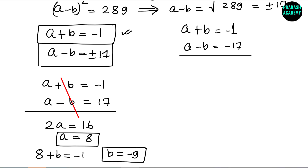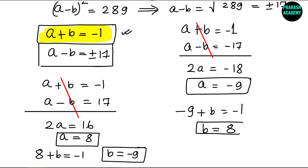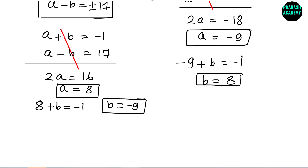Case 2: A plus B equals minus 1 and A minus B equals minus 17. Adding, 2A equals minus 18, so A equals minus 9. Plugging into the first equation: minus 9 plus B equals minus 1, so B equals 8. So we have two sets of solutions: A equals 8 and B equals minus 9, or A equals minus 9 and B equals 8.